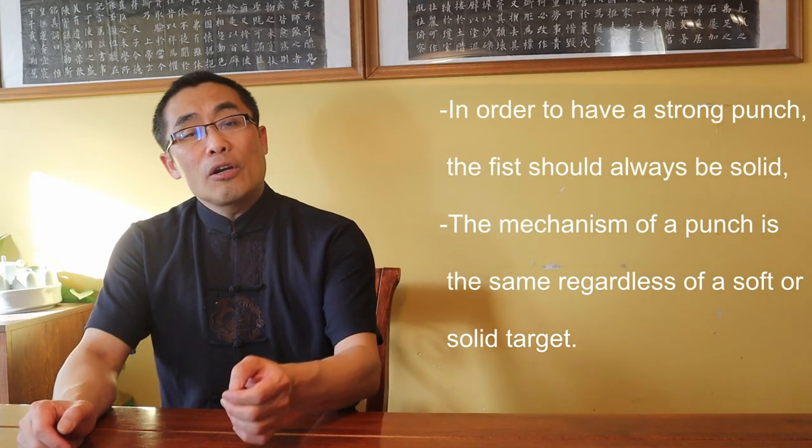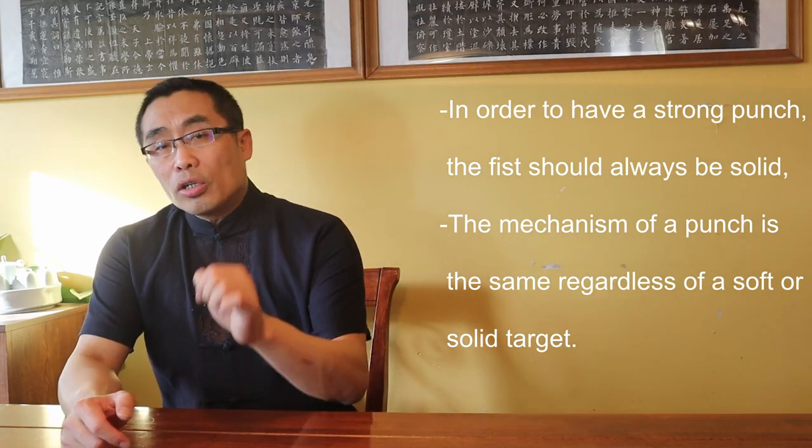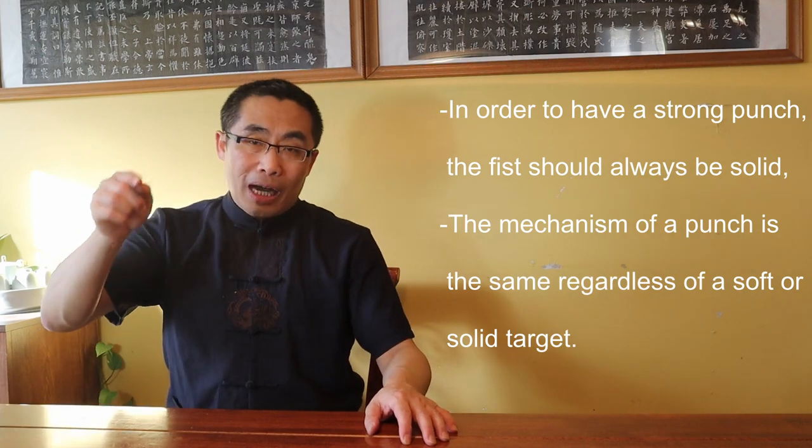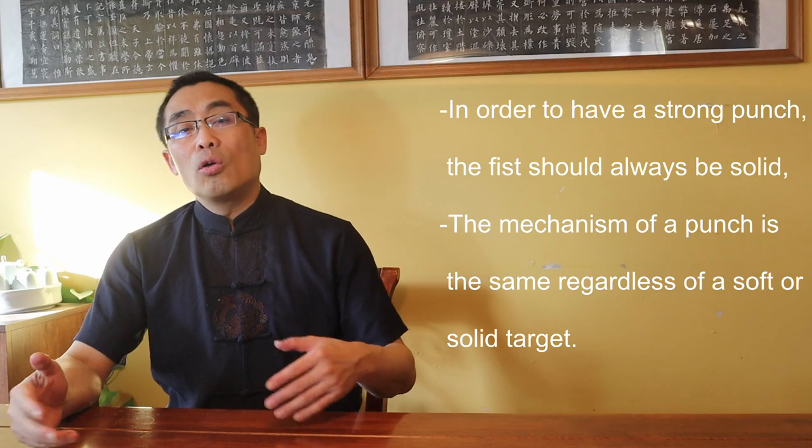I have a prior video talking about how to make a fist solid — link is in the description. Now, let's clarify a couple of misconceptions. Topic 5: Misperceptions. A simple topic such as fist shapes can also create unnecessary misperceptions. Two common ones: 1. In order to have a strong punch, the fist should always be solid. 2. The mechanism of a punch is the same regardless of a soft or solid target. Regarding the first: it is true that the fist should be solid, however, we first need to define the term 'solid' in this context.